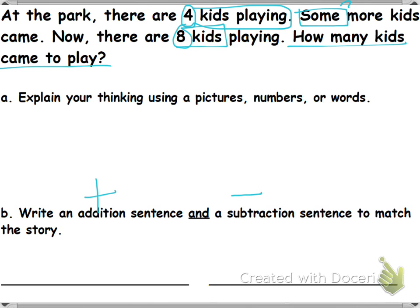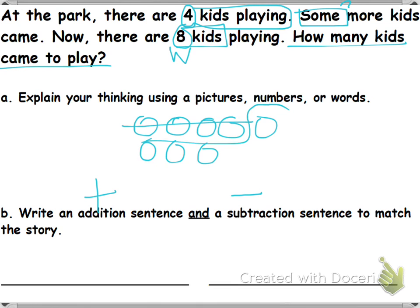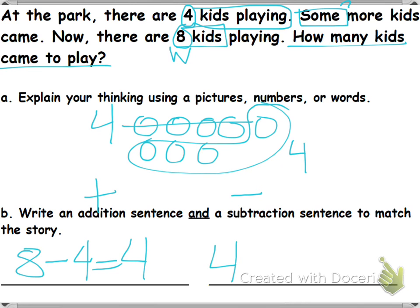Does the word problem tell us the whole? Yes, it does. 8 is our whole. So you should have drawn 8 circles. What is the part they tell us? 4. Cross out 4, circle the rest. How many did we circle? 4. So your subtraction sentence is 8 minus 4 equals 4. What is your addition sentence? 4 plus 4 equals 8. Give me a thumbs up if you got this correct.